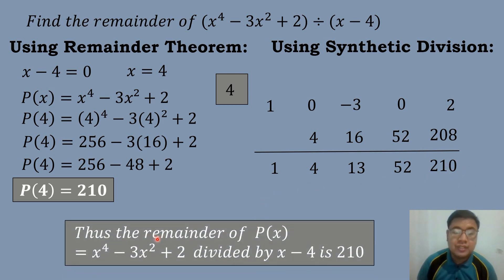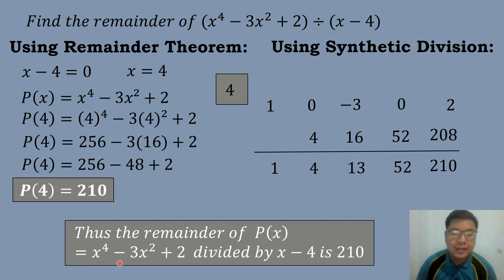Therefore, the remainder of P of X equals X to the 4th power minus 3X squared plus 2 divided by X minus 4 is equal to 210.